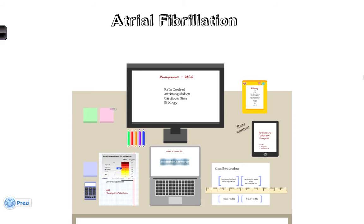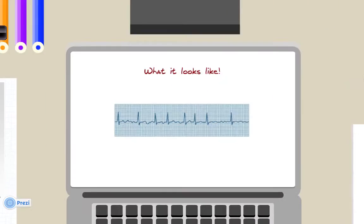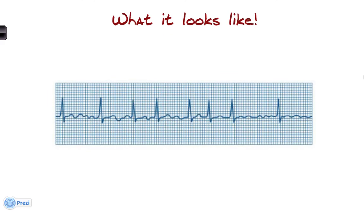Atrial fibrillation is routinely picked up during the physical exam of a consultation, but occasionally it can be discovered incidentally on the ECG. On the ECG it can be identified by an irregular R to R interval with no visible P waves, due to the chaotic atrial contraction.